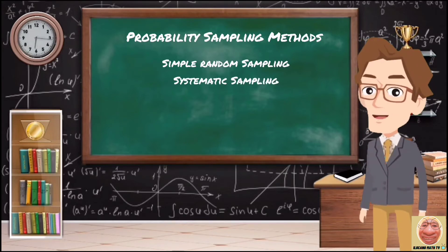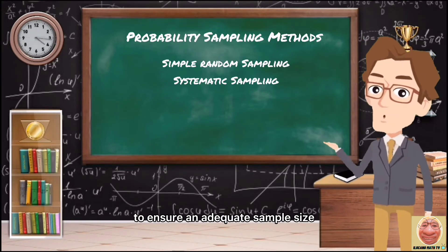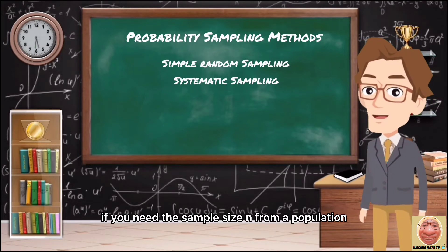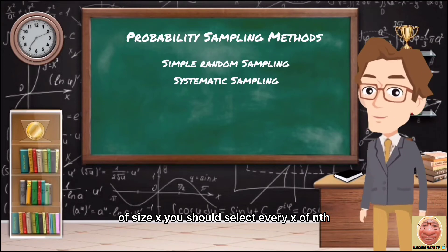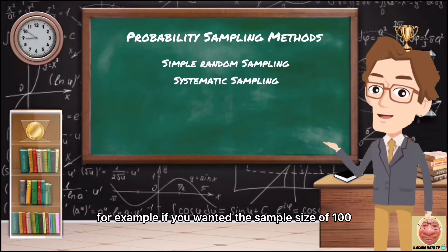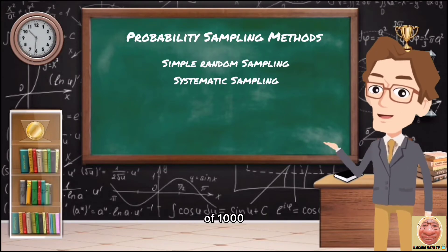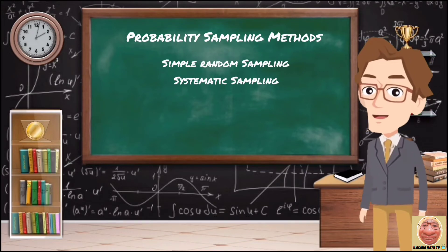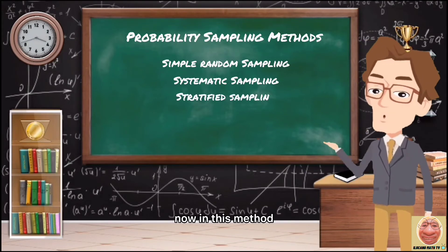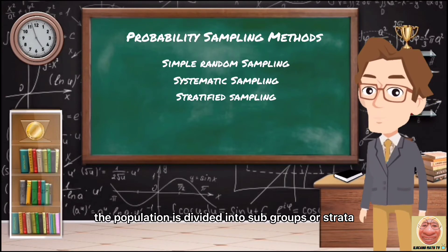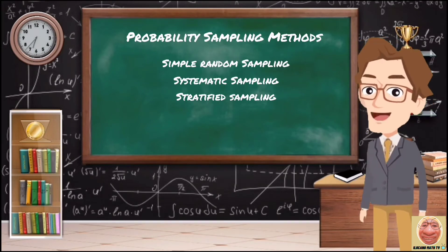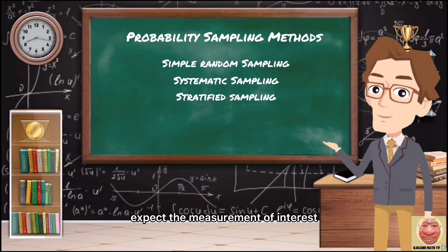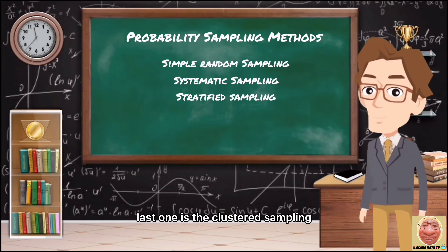Next is systematic sampling, where individuals are selected at regular intervals from the sampling frame. If you need a sample size N from a population of size X, select every X/N individual. For example, for a sample of 100 from a population of 1,000, select every 10th member of the sampling frame. Third is stratified sampling, where the population is divided into subgroups or strata that share a similar characteristic. It is used when the measurement of interest is expected to vary between subgroups, ensuring representation from all subgroups.